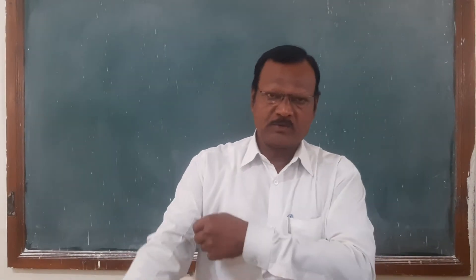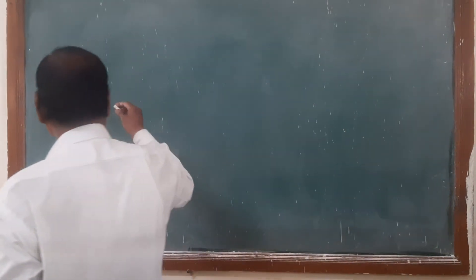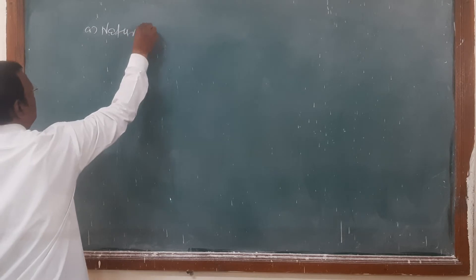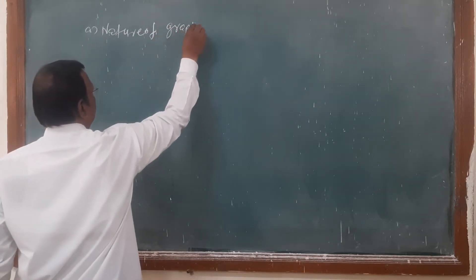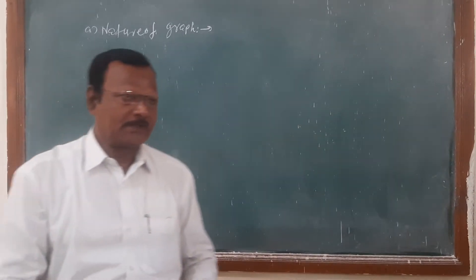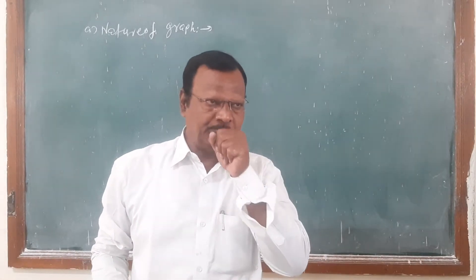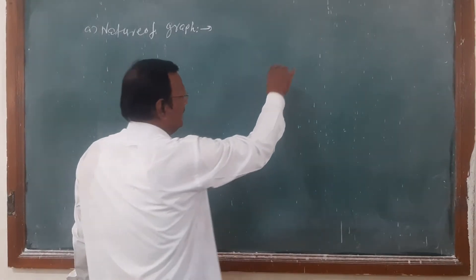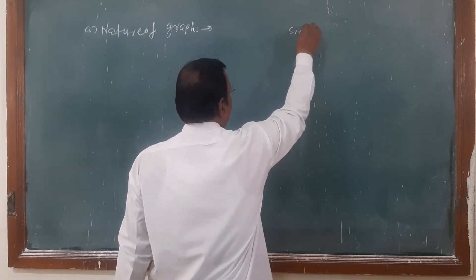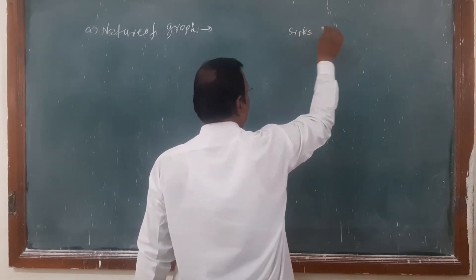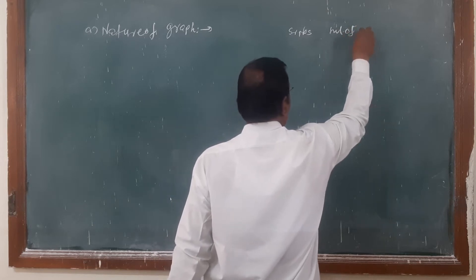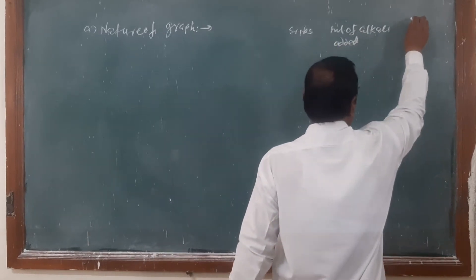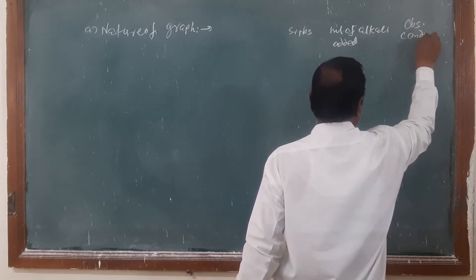Let us start with the first point: nature of graph, that is, graphical representation. We have already conducted this experiment in the laboratory. First, we recall our observation table. The observation table has serial numbers as the first column, millilitres of alkali added as the second column, and observed conductance as the third column.